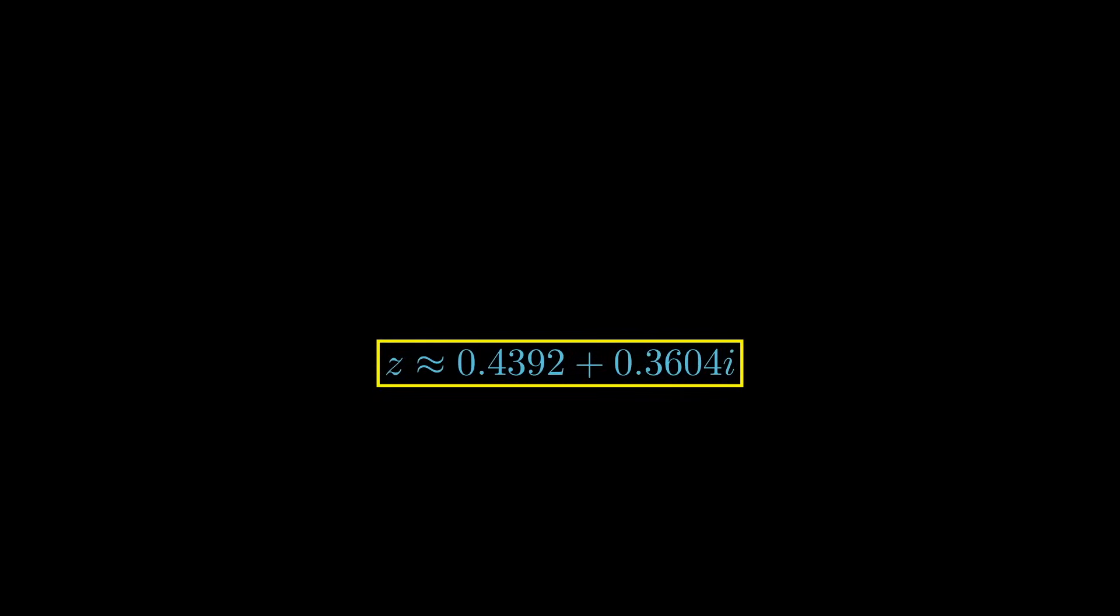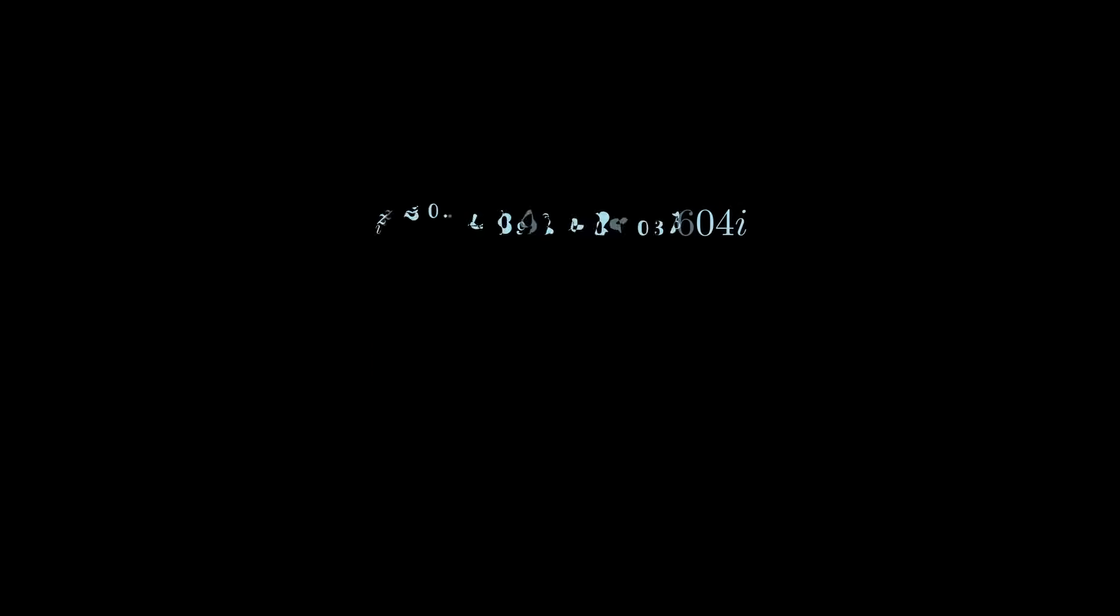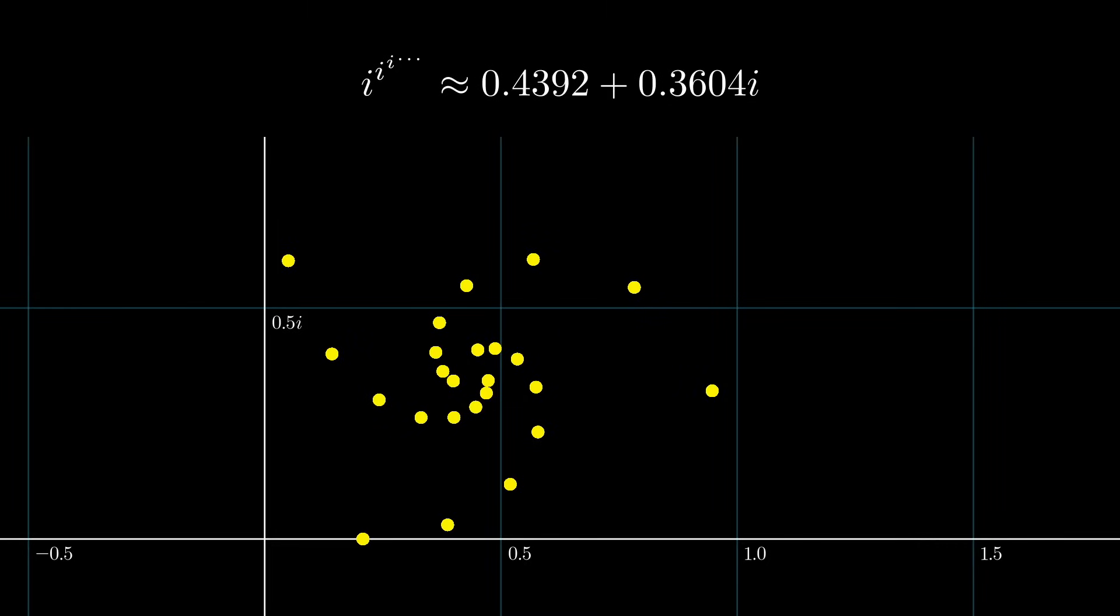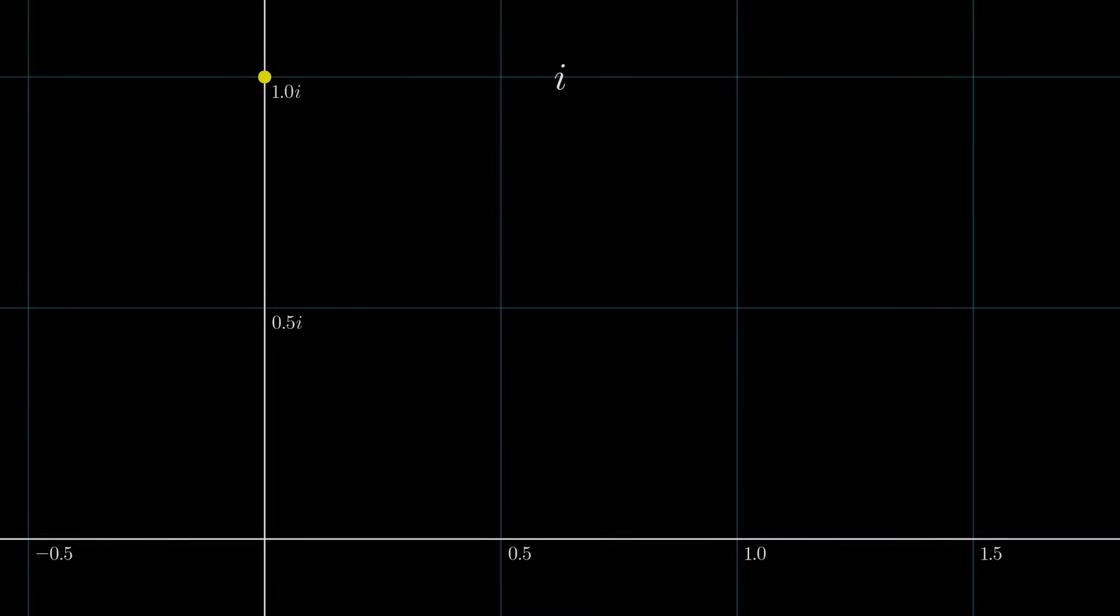Which does in fact match up with that graph from the beginning of the video. But you might see something a little bit troubling about this picture. Notice the second iteration. That was i to the i. It touches the real axis.